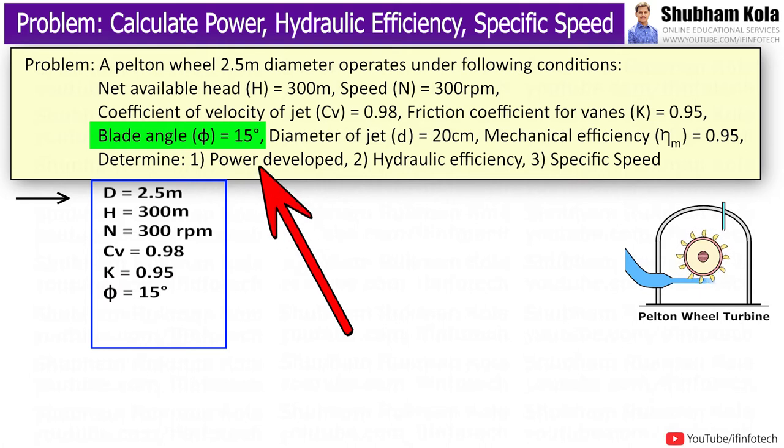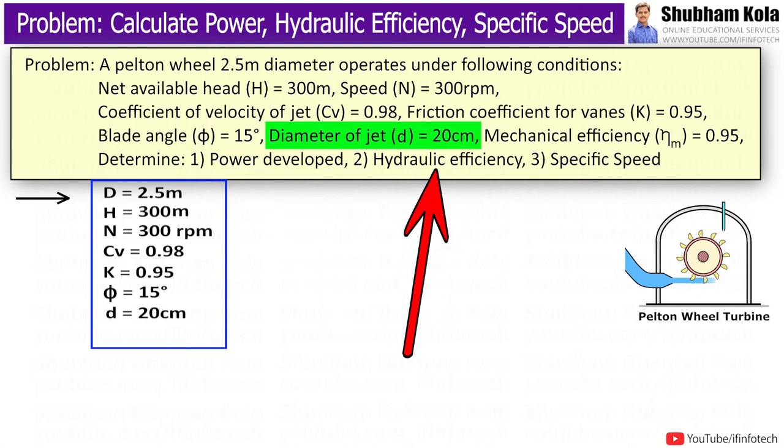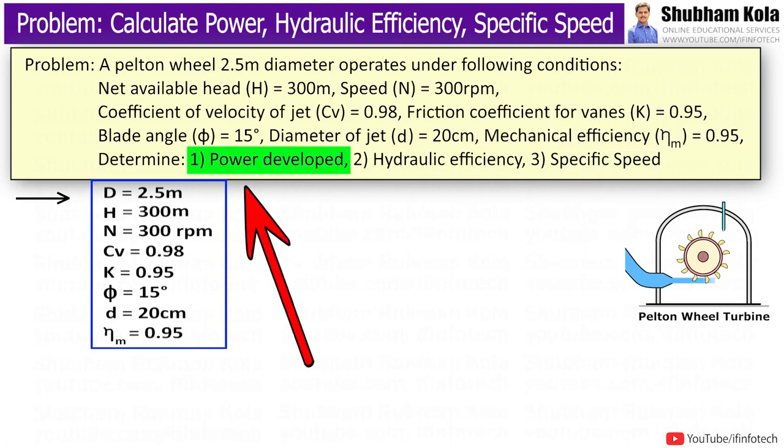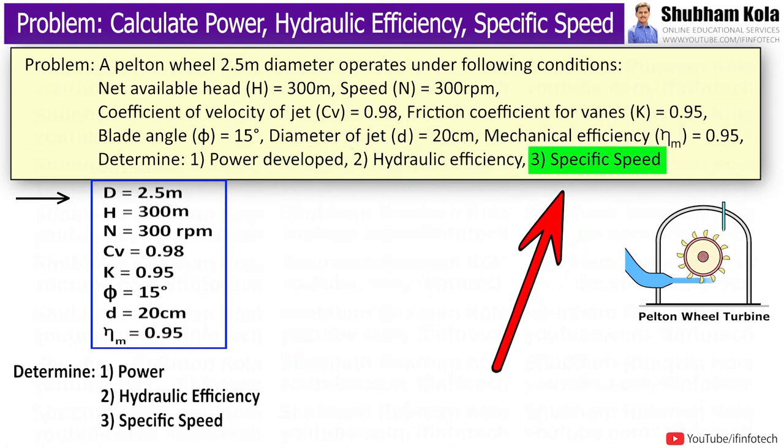Blade angle phi equal to 15 degree, diameter of jet d equal to 20cm, mechanical efficiency eta m equal to 0.95. Determine power developed, hydraulic efficiency, specific speed.